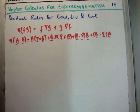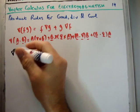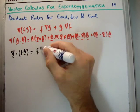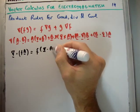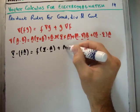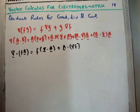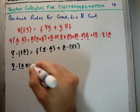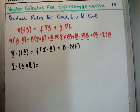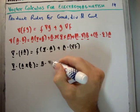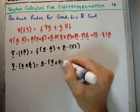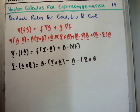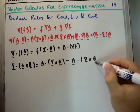For the product rules for divergences: if we take the divergence of vector a multiplied by a scalar f, we get the scalar f outside of the divergence of a, plus a dotted with the gradient of f. And if we take the divergence of the cross product of vectors a and b, we get b dot the curl of a minus a dot the curl of b.